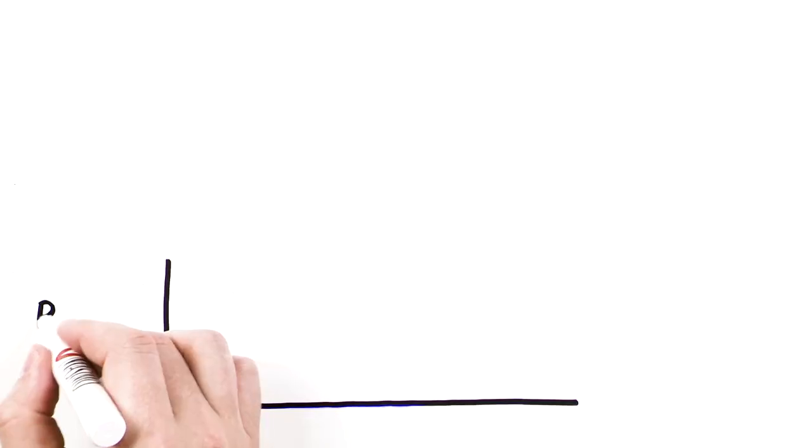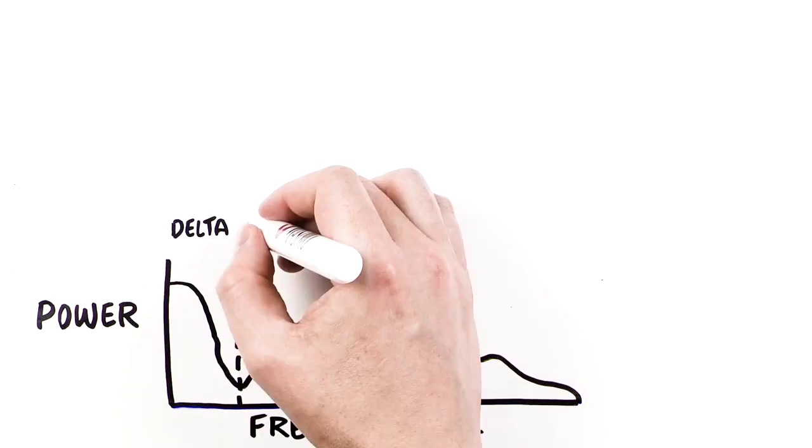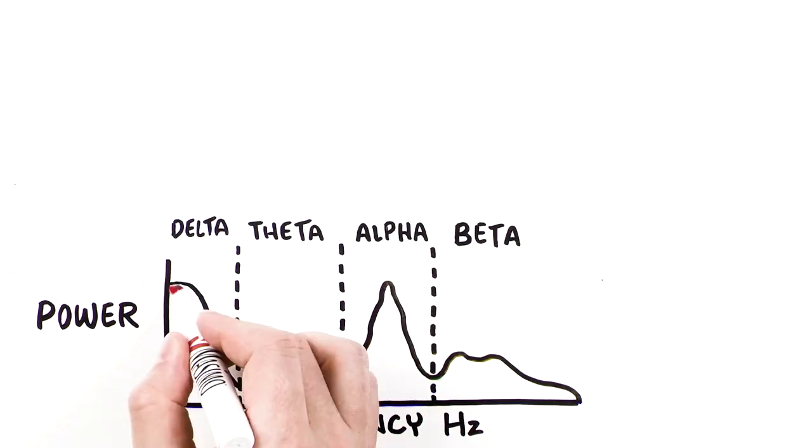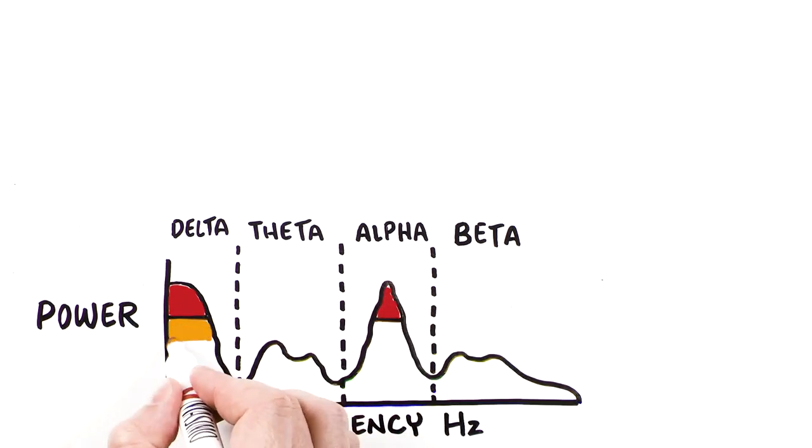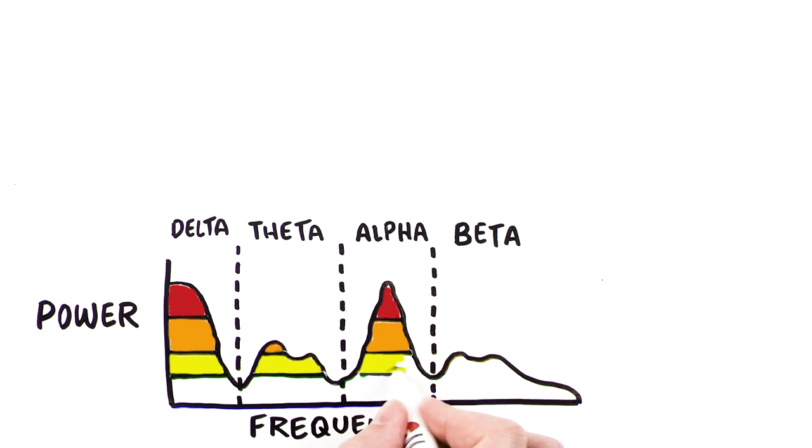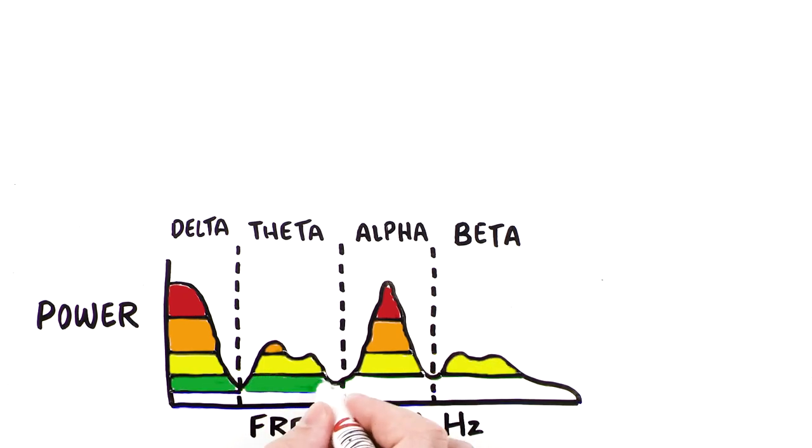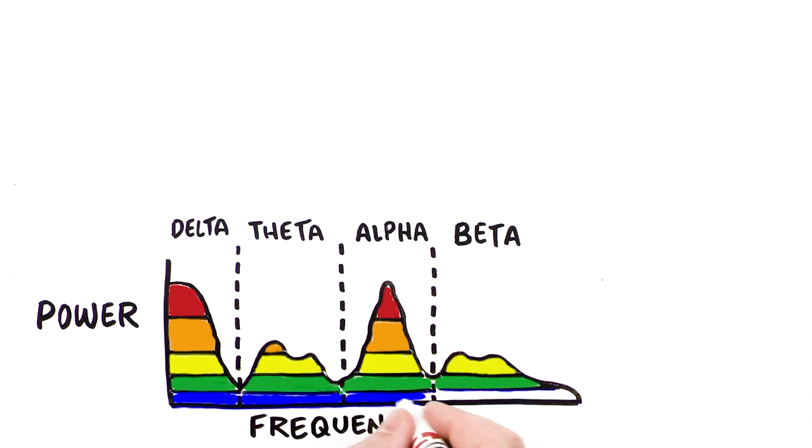Let's consider an analysis of a single lead of EEG and graph the amount of power in each frequency. Then, we can consider the power of these frequencies and use colors to grade their relative power. Warm colors are used for higher power frequencies, and cooler colors are used for lower power frequencies.